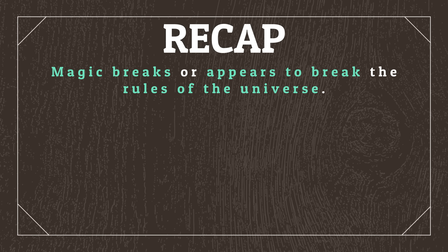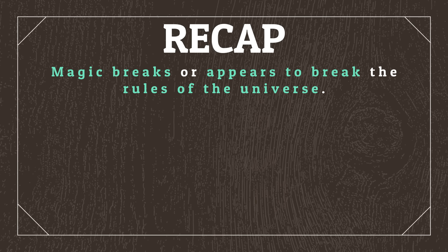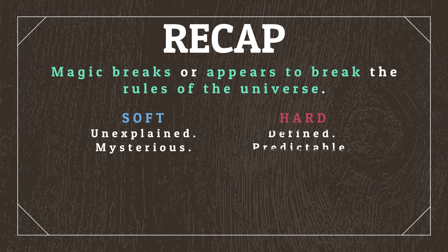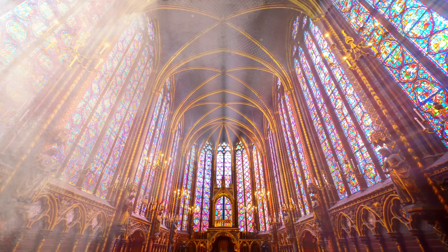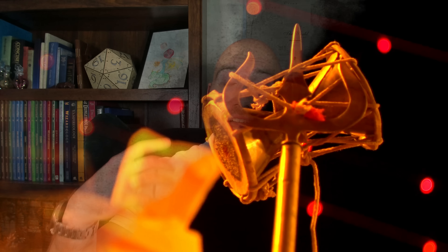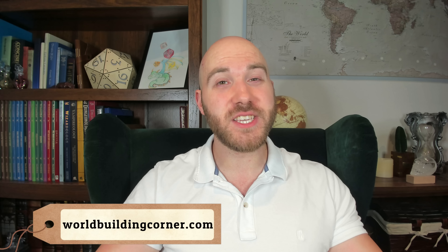To recap: magic refers to happenings that break, or appear to break, the rules of the universe. Magic can be separated into soft and hard magic, where soft magic refers to unexplained and mysterious magic, while hard magic refers to more clearly defined and predictable magic. Settings tend to fall into low, middle, or high magic, referring to the prevalence of the supernatural, though there are no rules for how magic should or should not be implemented, and you can mix and match these settings to produce a magic system that best fits your world. Join me next time when we'll return to a more realism-based approach to worldbuilding and look at religion, discussing how religions are founded, evolve over time, and the cultural impacts that they have. You can find all the information in this video, as well as other resources for worldbuilding in general, over at worldbuildingcorner.com. If you've enjoyed this video, don't forget to like and subscribe to follow the worldbuilding journey. Until next time, stay awesome!